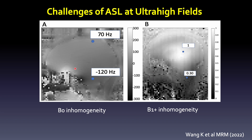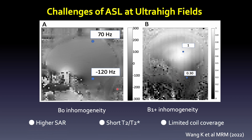However, the B0 and B1 inhomogeneity also increase at ultra-high field, as shown in this B0 field map. One ppm offset is about 300 Hz at 7T, and it's only 120 Hz at 3T. The B1 also decreases — it can be 30% at the labeling region. On top of that, we have high SAR, shorter T2, T2*, and limited coil coverage.